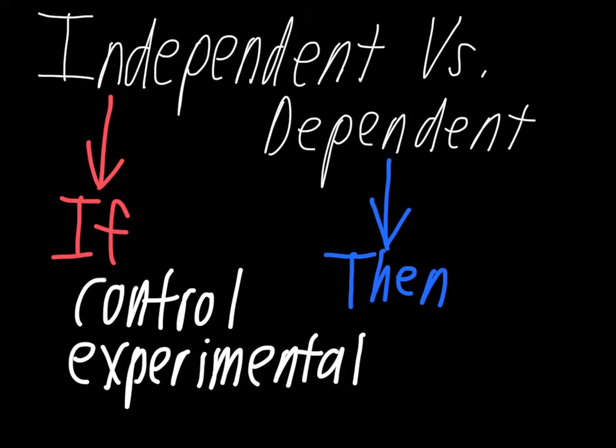So in this case, we're looking at the vitamins, whether or not we're giving the runners vitamins. The dependent variable, then, is their times. So we'll take a second to write this one down.